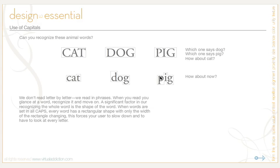We don't read letter by letter — we read in phrases. When you read, you glance at a word, you recognize it, and you move on. A significant factor in recognizing the whole word is the shape of the word. When words are set in all caps, every word has a rectangular shape with only the width of the rectangle changing. This forces your reader to slow down and look at every single letter.